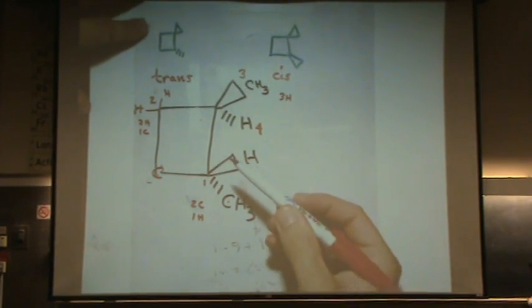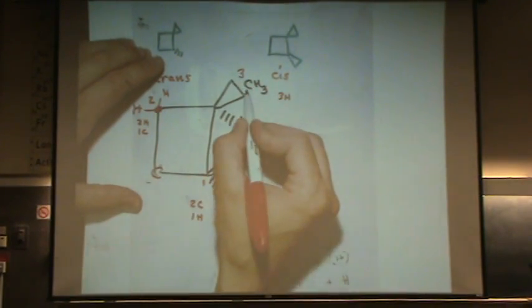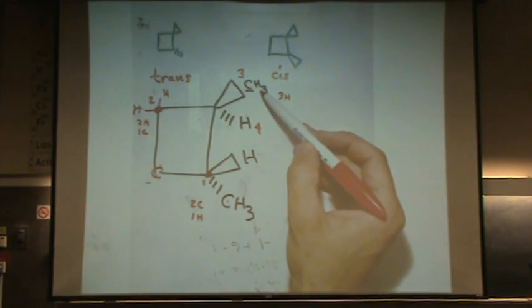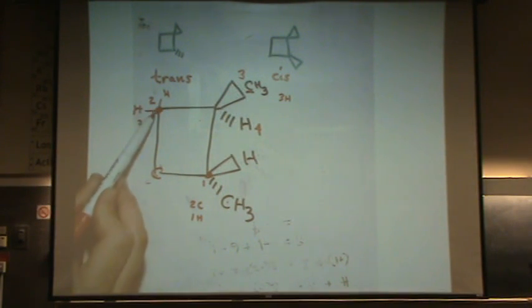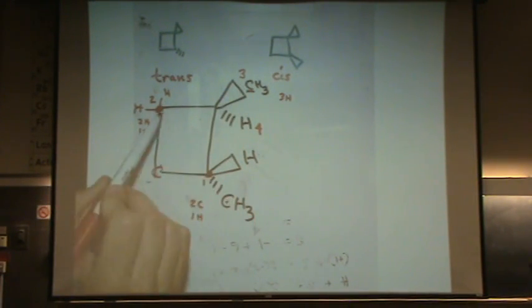We're comparing this carbon, and this one, and this one. What's it attached to? This is attached to three hydrogens. This is attached to two hydrogens and a carbon. This is attached to a hydrogen and two carbons. So it's what's attached to it, because these three tied, they're three carbons. Is that cool? Okay.